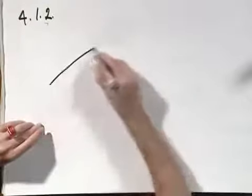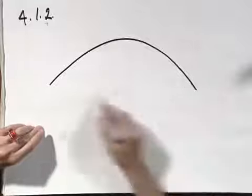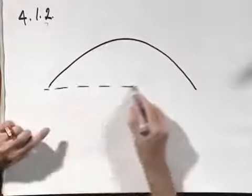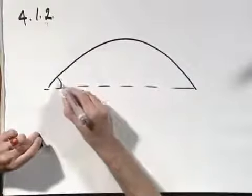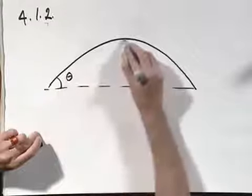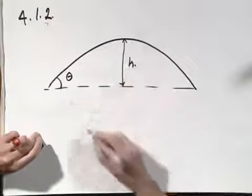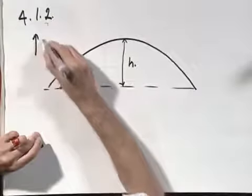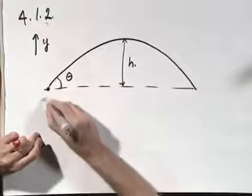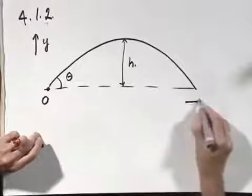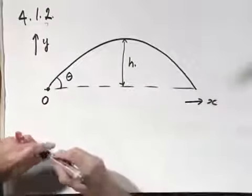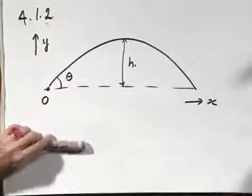There is a projectile which is thrown up at an angle theta. It reaches a certain height h. Let's call this the positive y direction. Let's call this point zero, both in x and in y direction. The object has a mass m.